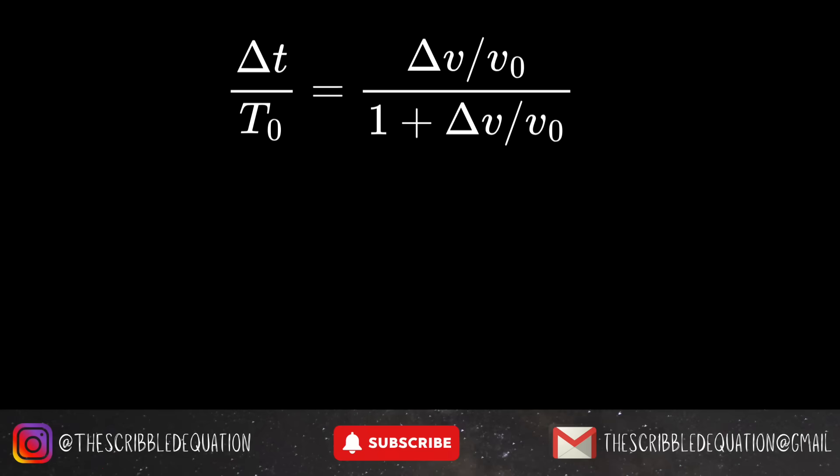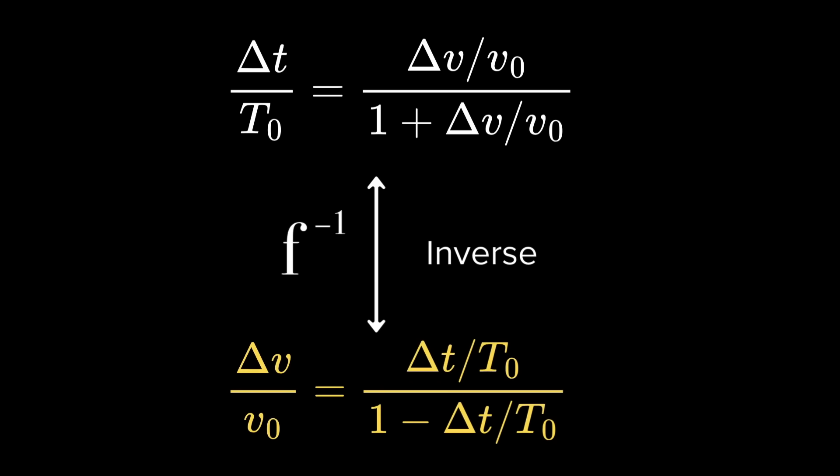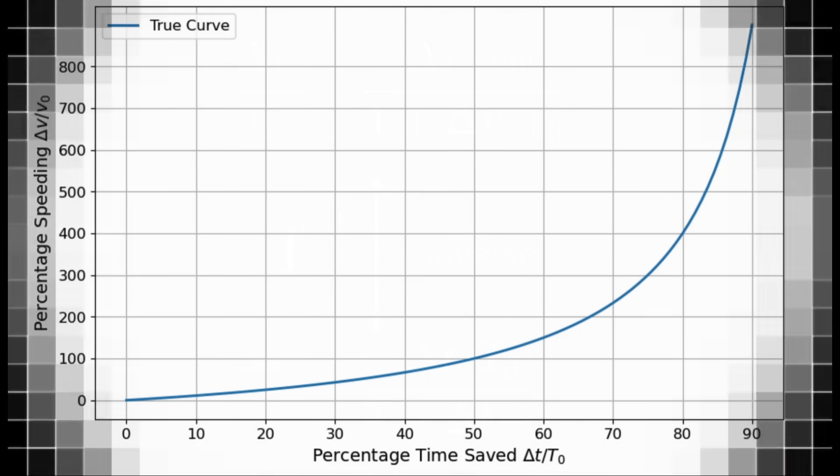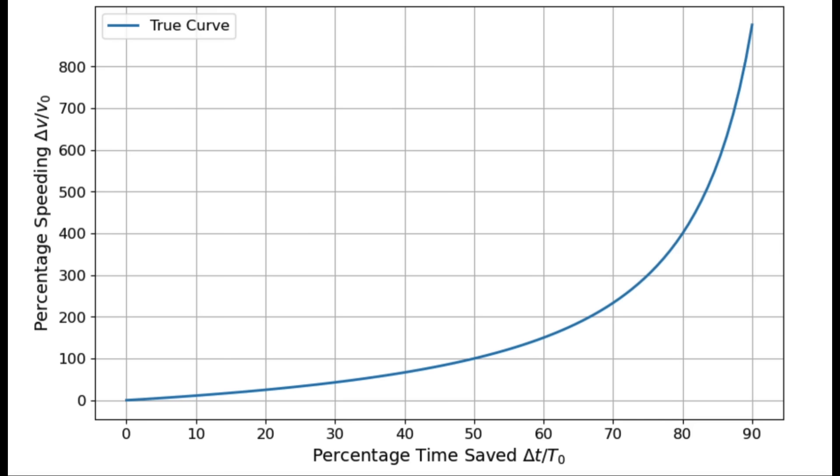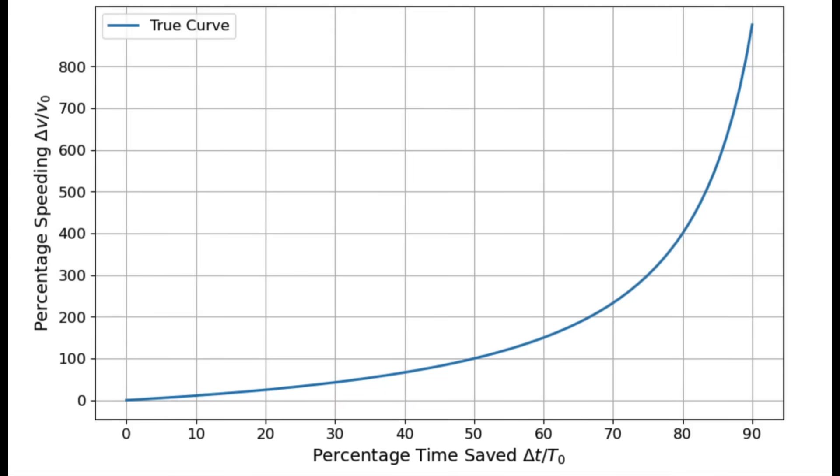Another nice thing about this universal speeding relationship is that it can be inverted to get delta v over v naught as a function of delta t over t naught. Which looks like this. The initial part of the plot follows what we discussed earlier when we were only adventurous enough to think about going at most double the speed limit. But this non-linearity becomes even more severe as you want to save more and more time. If you want to save 80% time, you need to be going 400% of the speed limit. That means in our opening example, to save 48 minutes, you need to be going at 240 miles per hour. And if you want to save almost all of your time, you need to be going infinitely fast.